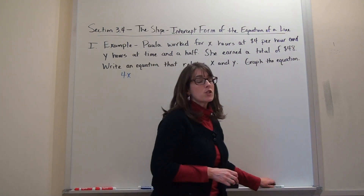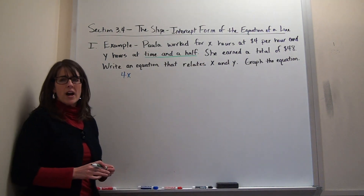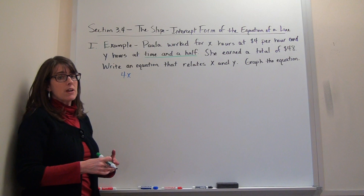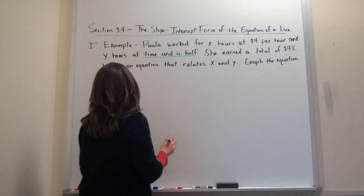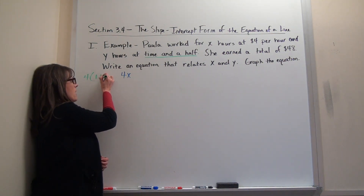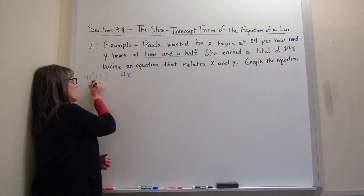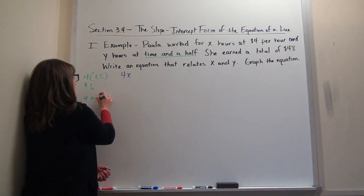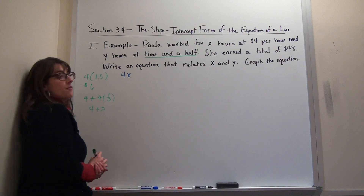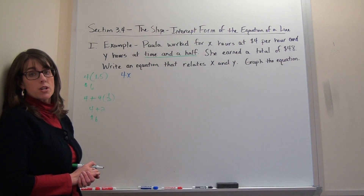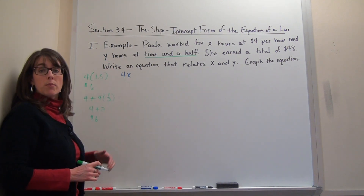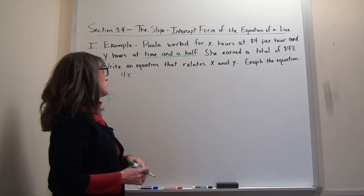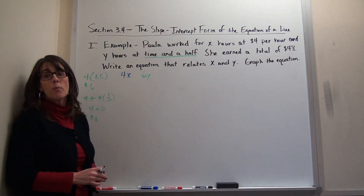When she earns $4 an hour and works for x hours, that's represented as 4x. For overtime, she gets time and a half. You take the straight pay and add half of it: $4 plus $2 equals $6 an hour. So her time and a half pay is $6 an hour, and she does that for y hours, giving us 6y for all overtime earnings.